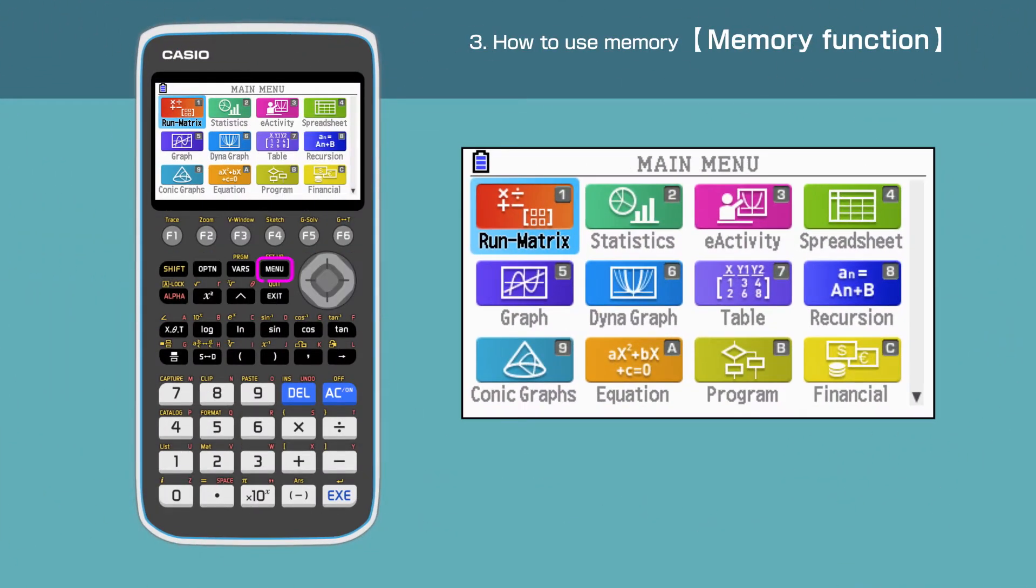Press the menu button to open the main menu. Press 1 to enter the Run Matrix menu, or move the cursor and highlight 1, Run Matrix, then press Execute.